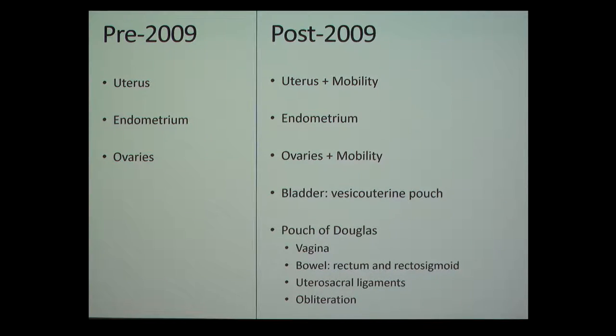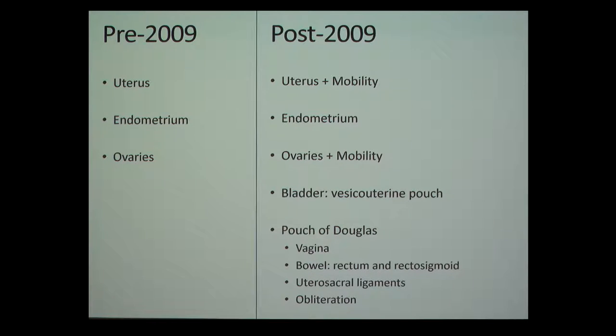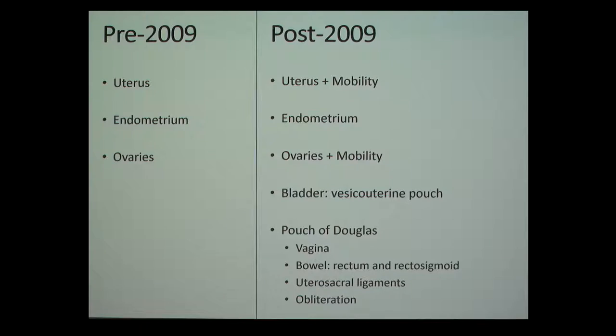Before 2009, I looked at the uterus, the endometrium, and the ovaries. After 2009, I started looking at the uterus and its mobility, the endometrium, the ovaries and their mobility, the bladder, and mainly the pouch of Douglas. When you put the probe in the posterior fornix you can look at the vagina, the bowel, and the uterosacral ligaments, and you can see whether there is pouch of Douglas obliteration. The two most important things for surgeons — regarding degree of difficulty — are whether there is pouch of Douglas obliteration and whether there are bowel nodules.